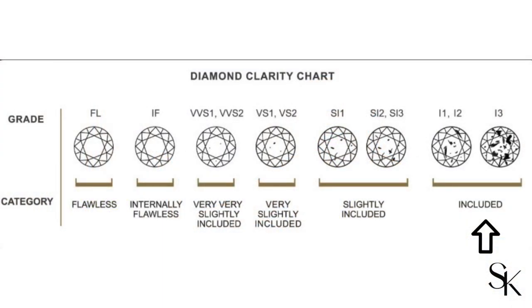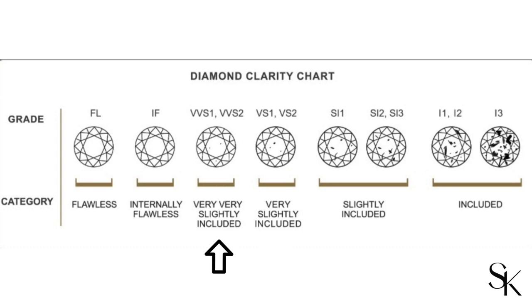The next C is clarity, which refers to how clean a stone is. The scale starts at I3, I2, I1, then goes to SI — slightly included — SI3, SI2, SI1, then VS — very slightly included — VS2, VS1, then VVS — very very slightly included — VVS2, VVS1, and then internally flawless.